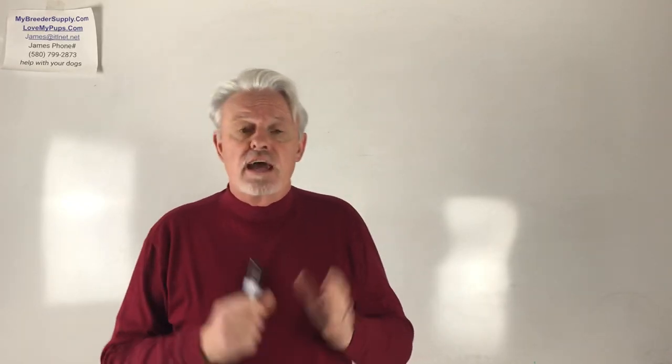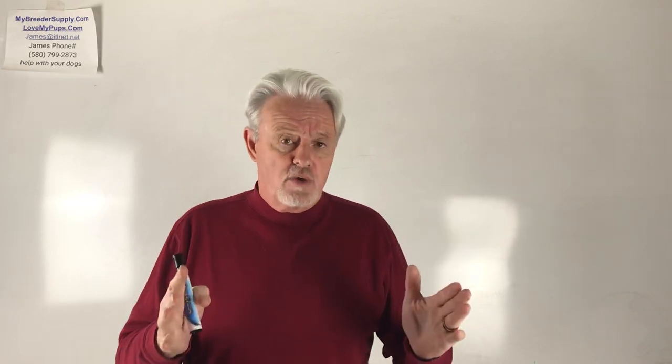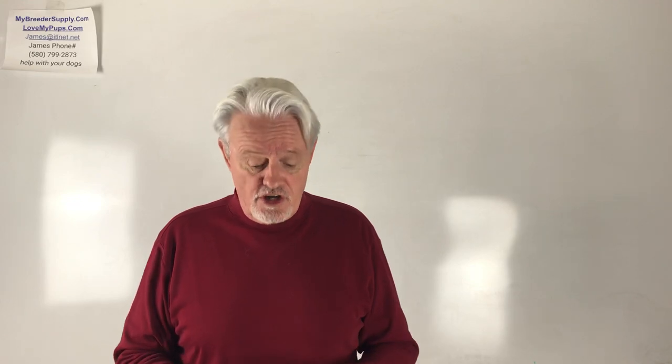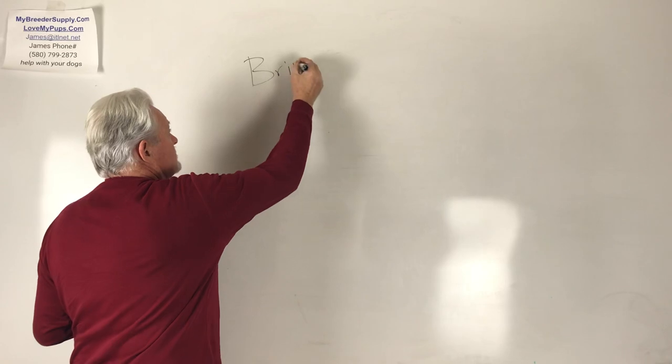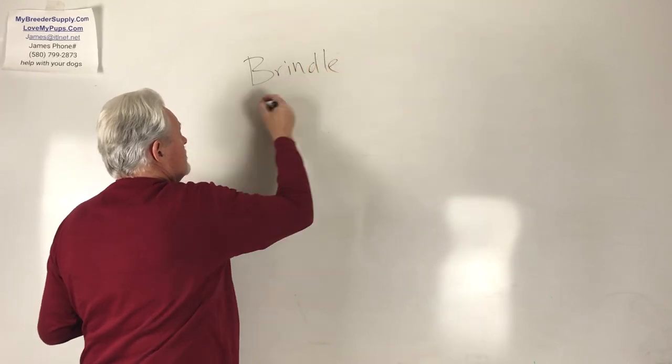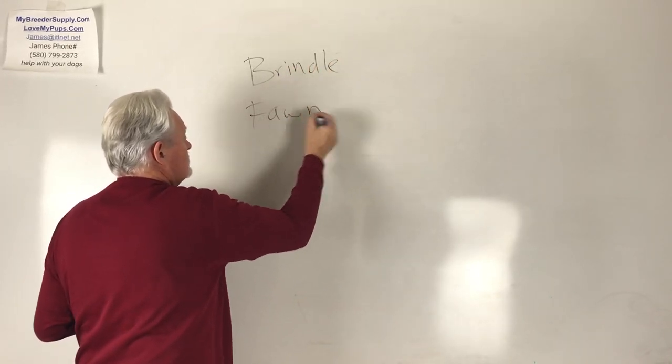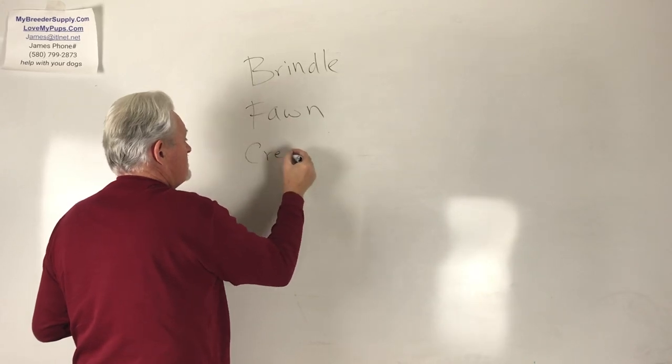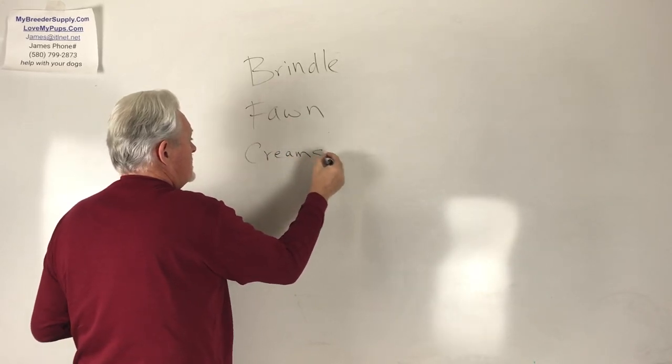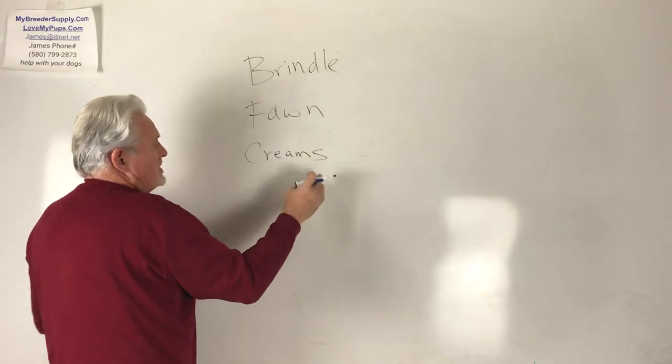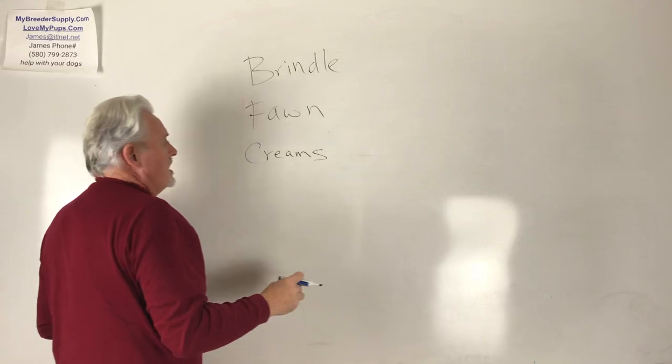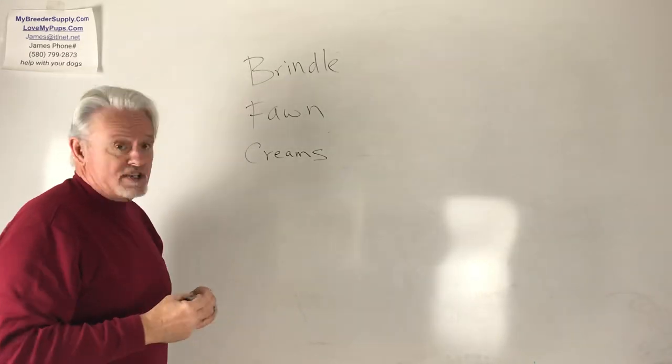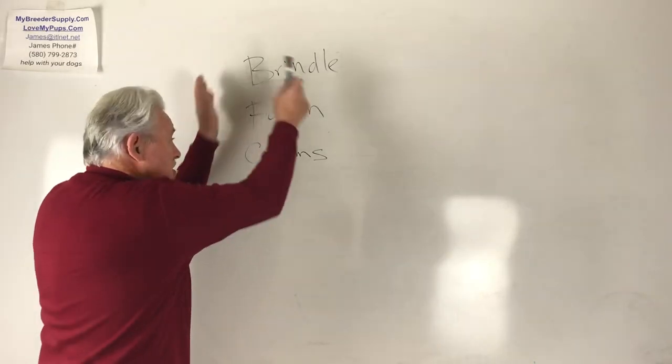AKC is really all about the show ring and there are only certain colors for Frenchies that are allowed in the show ring. And those would be brindles, fawns, creams, and then you can have variations of that. They could be pied, you can have a pied fawn, a brindle pied, but those are the three basic colors that can be judged in the show ring.